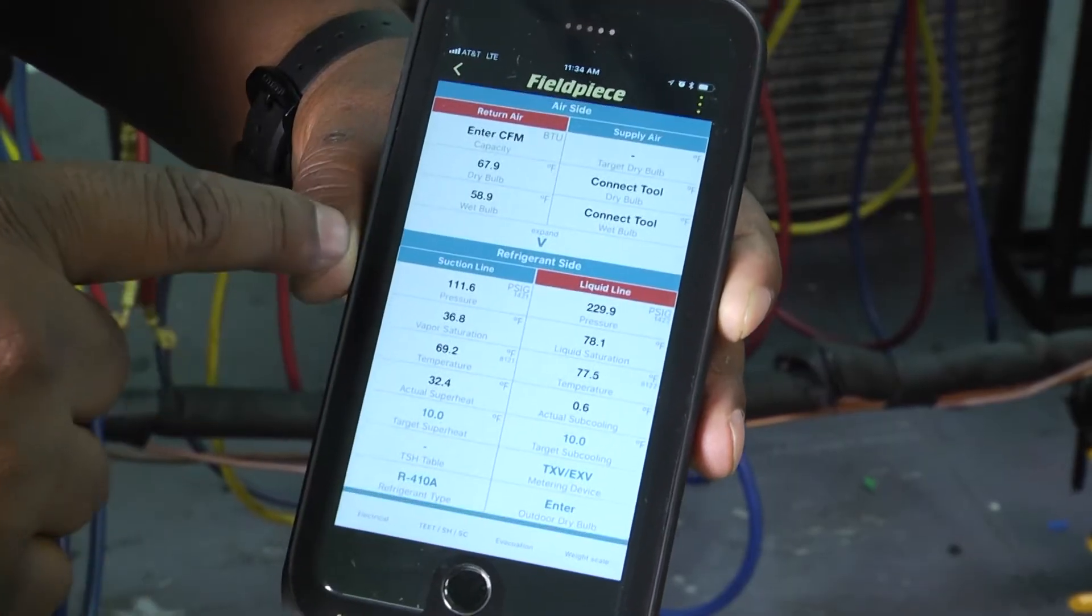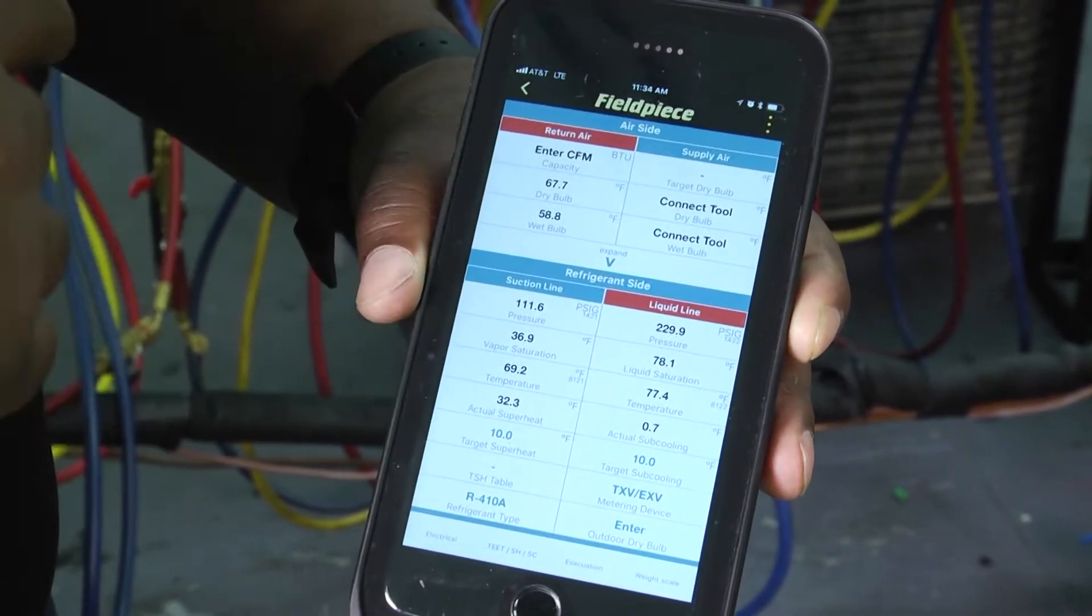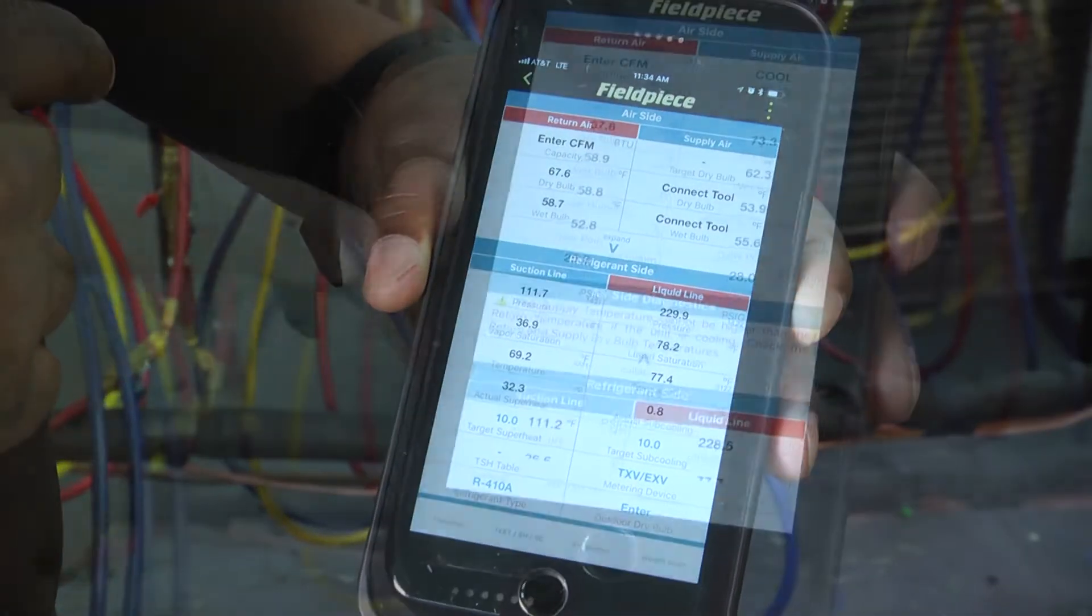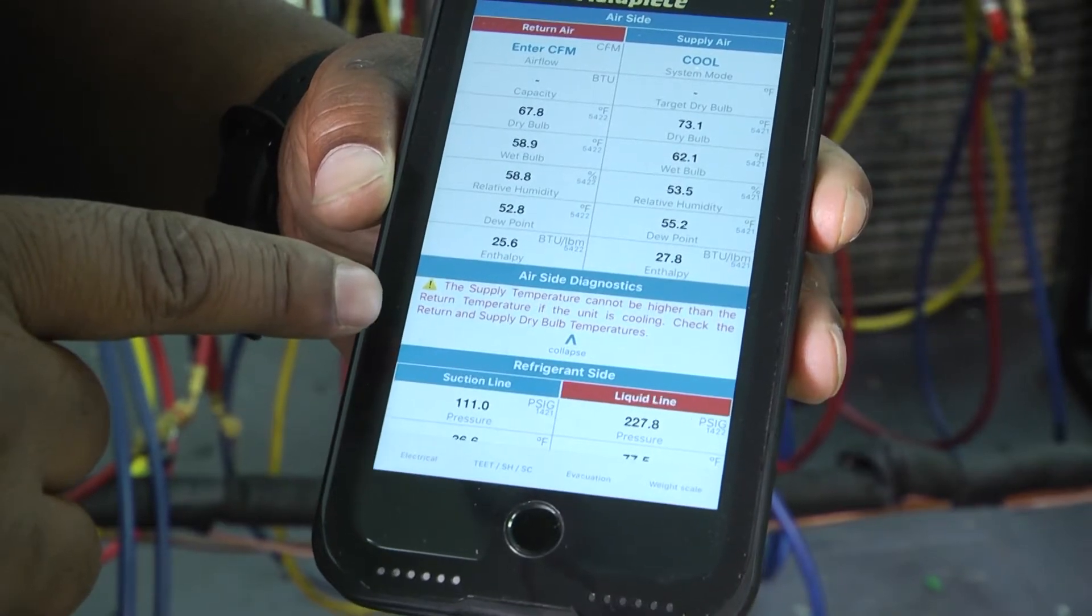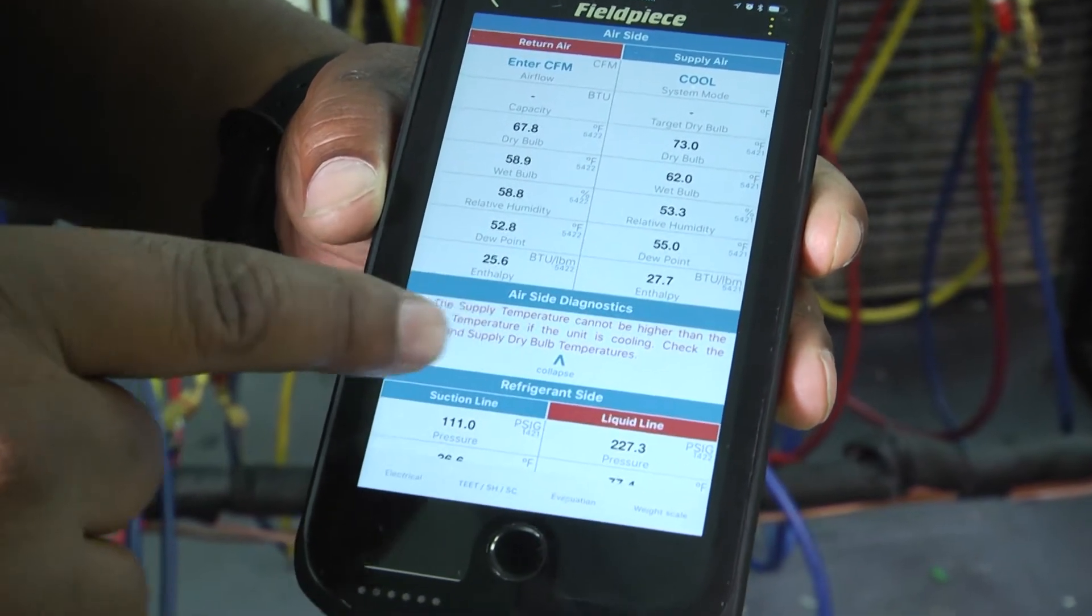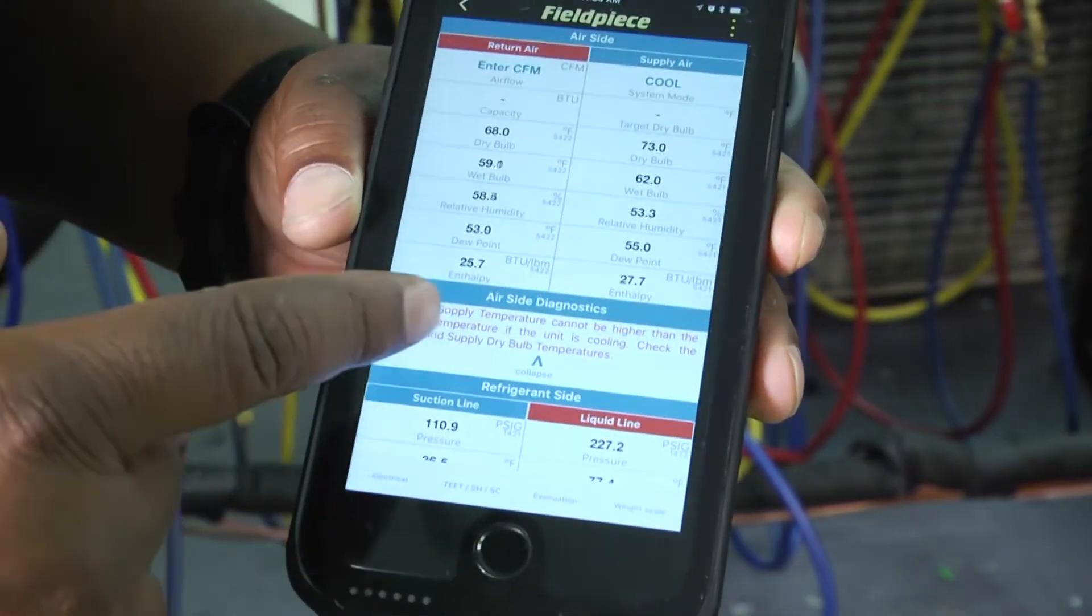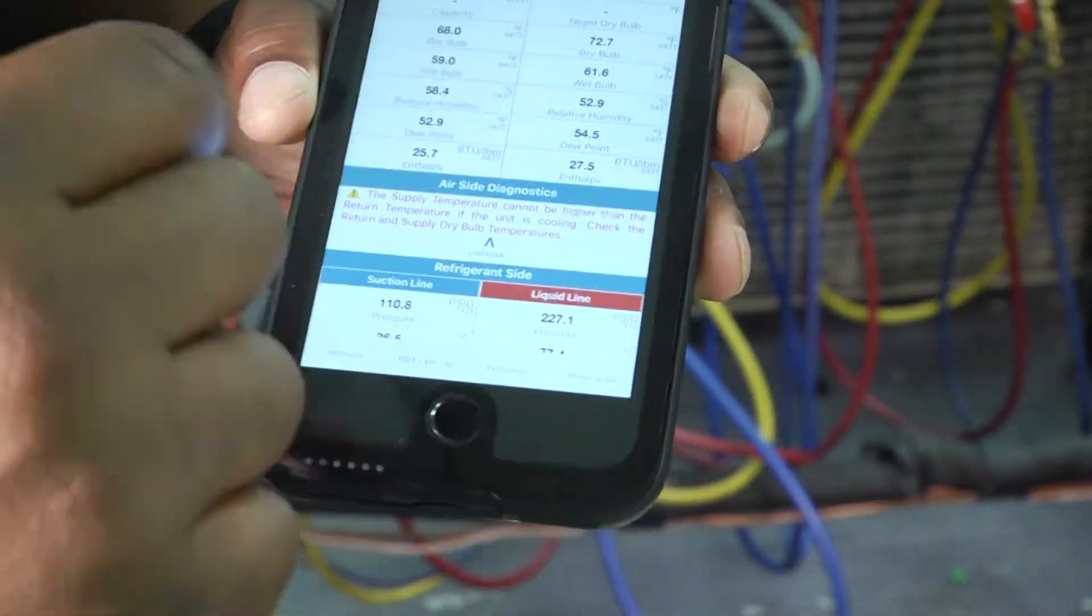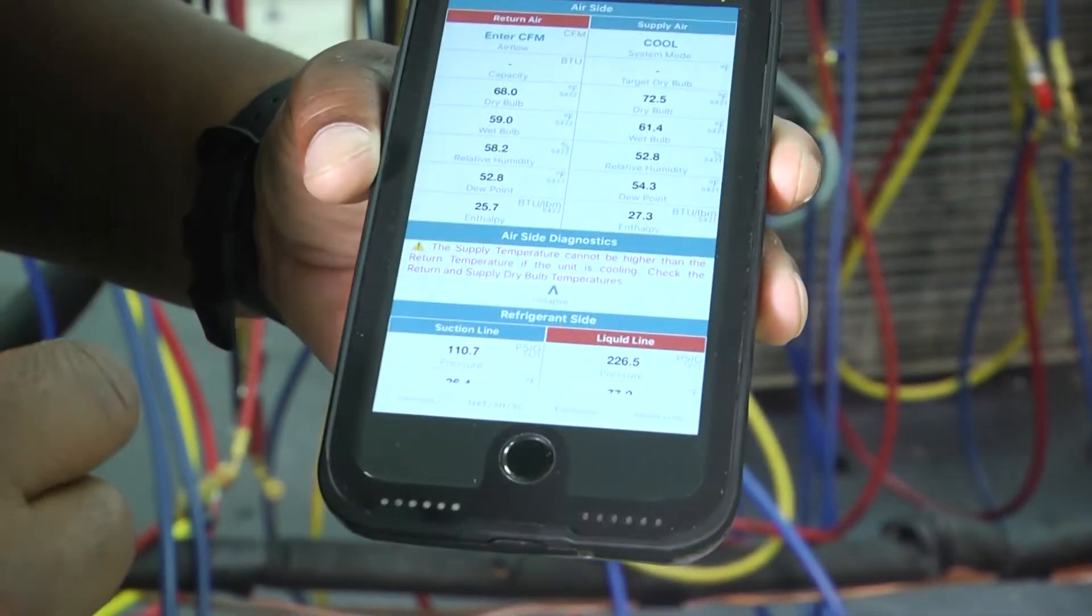When we look up here, we can get an airflow deal. It gives us our dry bulb and our wet bulb temperatures. So sometimes an error will pop up that says the supply temperature cannot be higher than the return temperature. If the unit is cooling, check return and supply dry bulb temperatures. What that simply means is I switched them up and maybe hit that little sensor and have them in the wrong spot. So I'll just have to go over there and correct that.